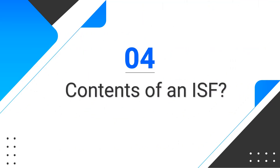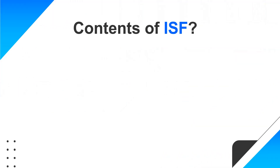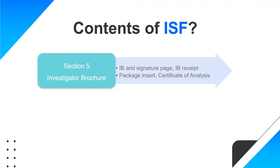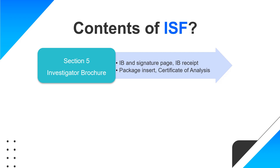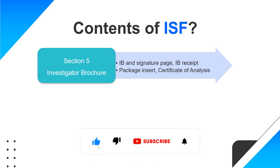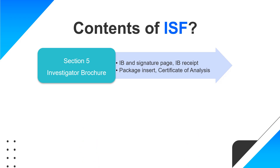Section 5 of the ISF contains the Investigator Brochure. It includes the Investigator Brochure itself, the signature page on the IB, the IB receipt, any package insert for the investigational product, and the certificate of analysis. All these documents are filed in section 5 of the ISF.